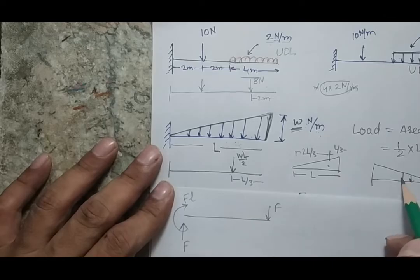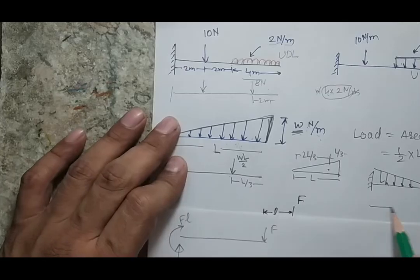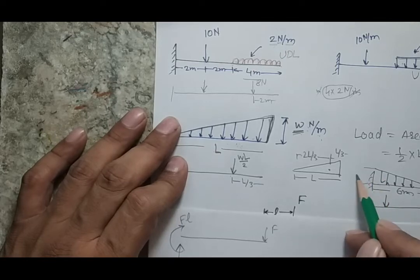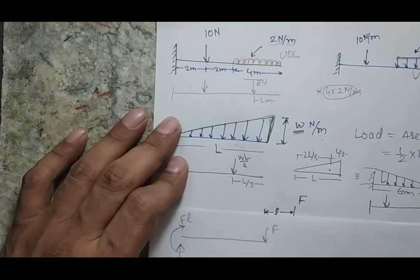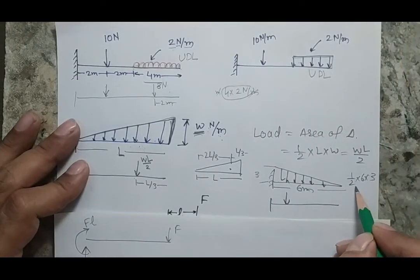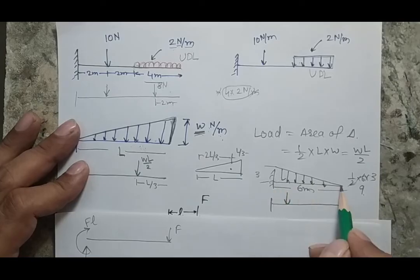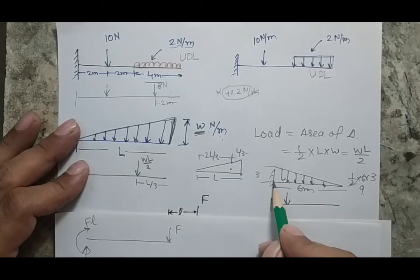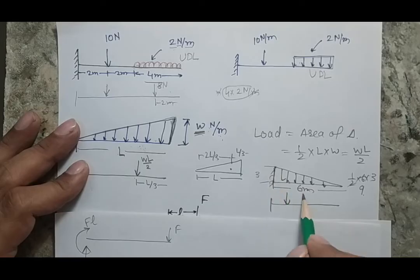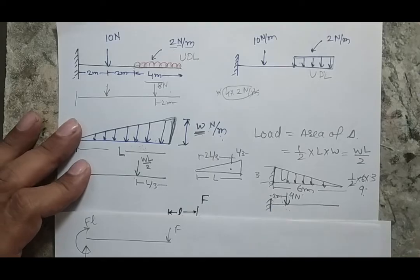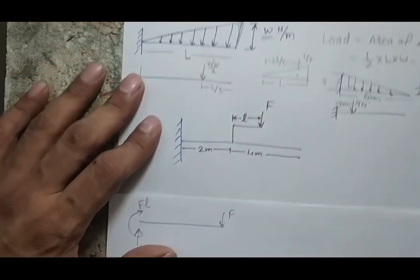For example, if the loading is triangular with maximum at the fixed side, and the total length is 6 meters with height 3 N/m, the total load is (1/2) × 6 × 3 = 9 newton. The position of this equivalent load is at L/3 = 6/3 = 2 meters from the fixed side (maximum loading side). So the equivalent beam has a 9 newton load acting 2 meters from the fixed side.